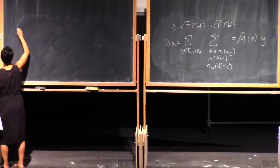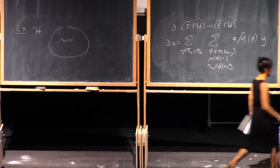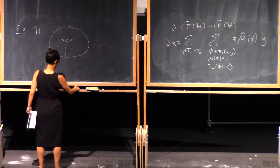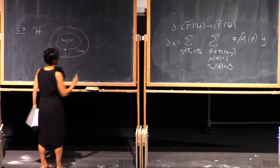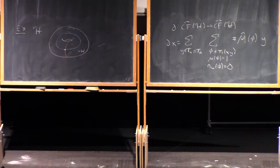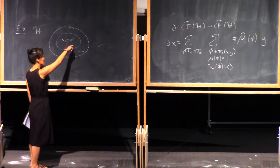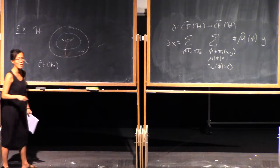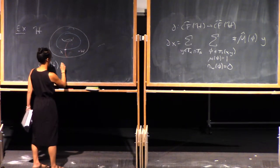Let's look at an example — the following Heegaard diagram. Alphas are red, betas are blue. We have a basepoint somewhere. Here g equals one, so Sym^g of the surface just is the surface itself. T_alpha just is alpha itself, and T_beta just is beta itself. The Heegaard Floer chain complex CF-hat is generated by intersection points between T_alpha and T_beta. There's a single intersection point, so this is just a single copy of F.